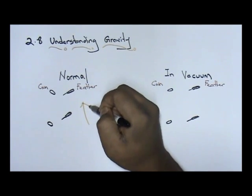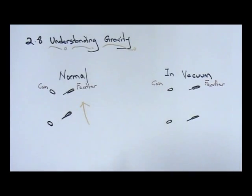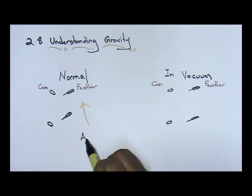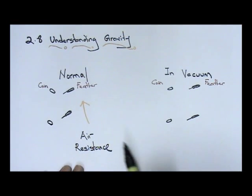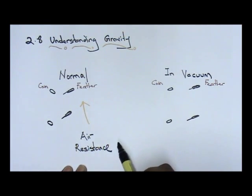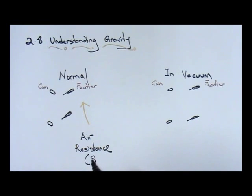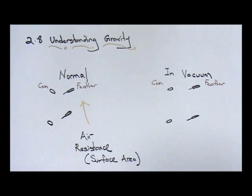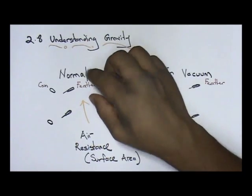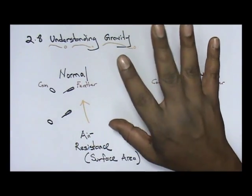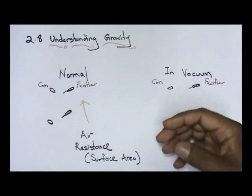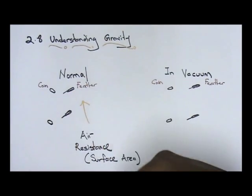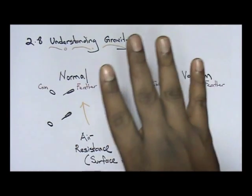The feather has what we call air resistance acting on it. This air resistance is due to surface area. Because the feather has a larger surface area, it experiences more air resistance, and because of that larger surface area, you will have more resistance on your feather, so the feather takes a longer time to fall down.